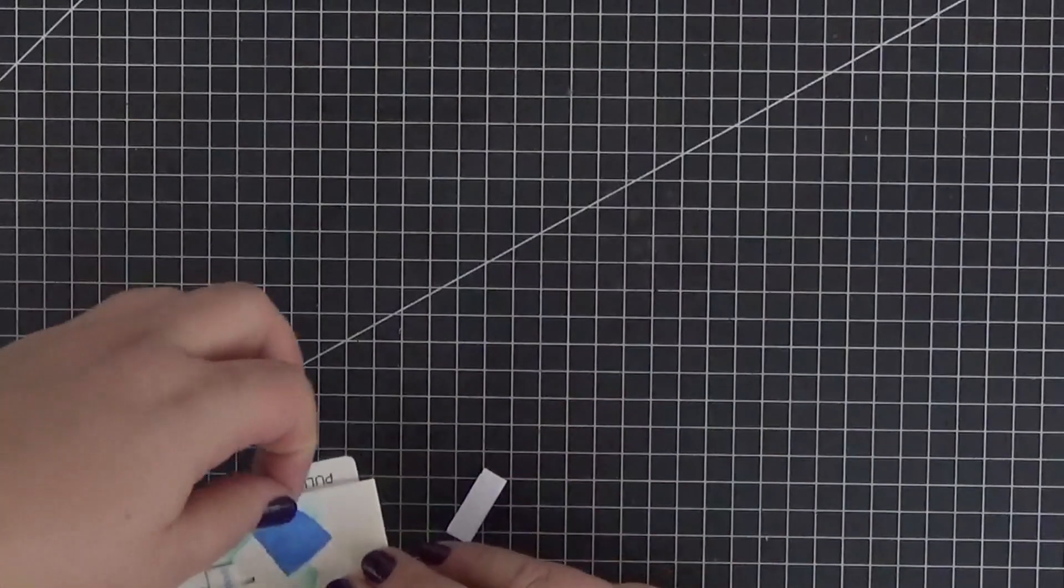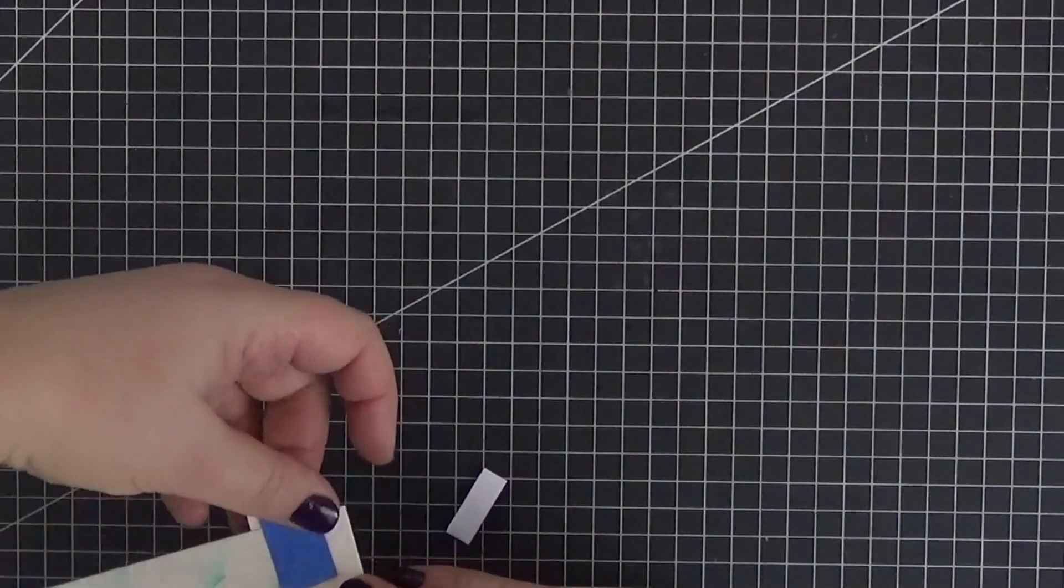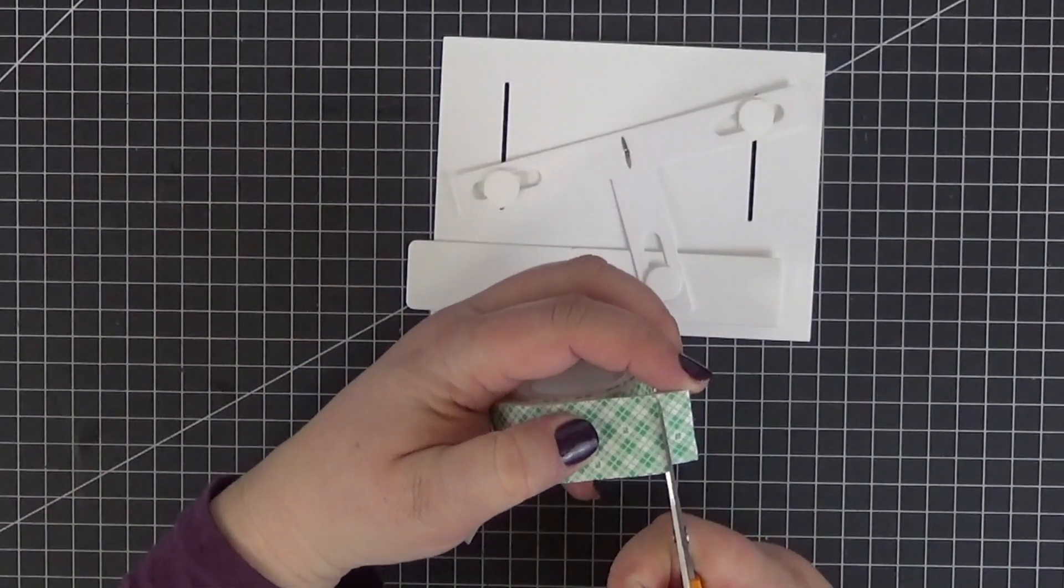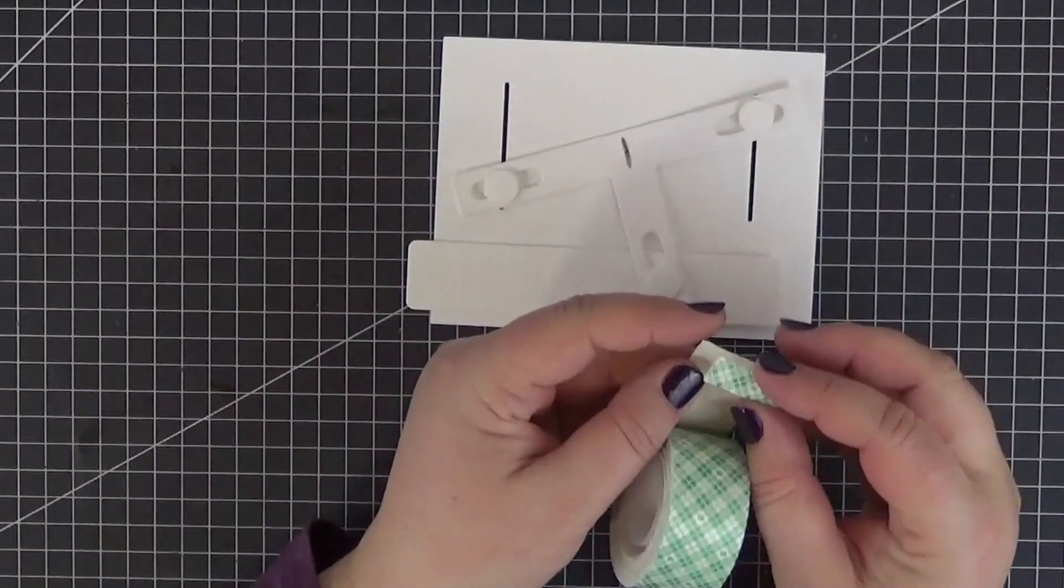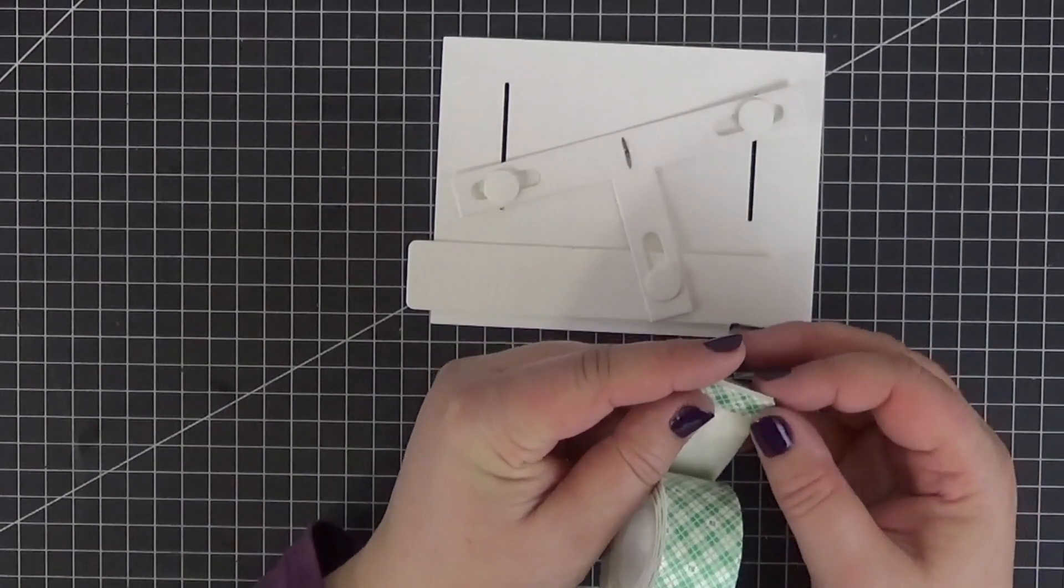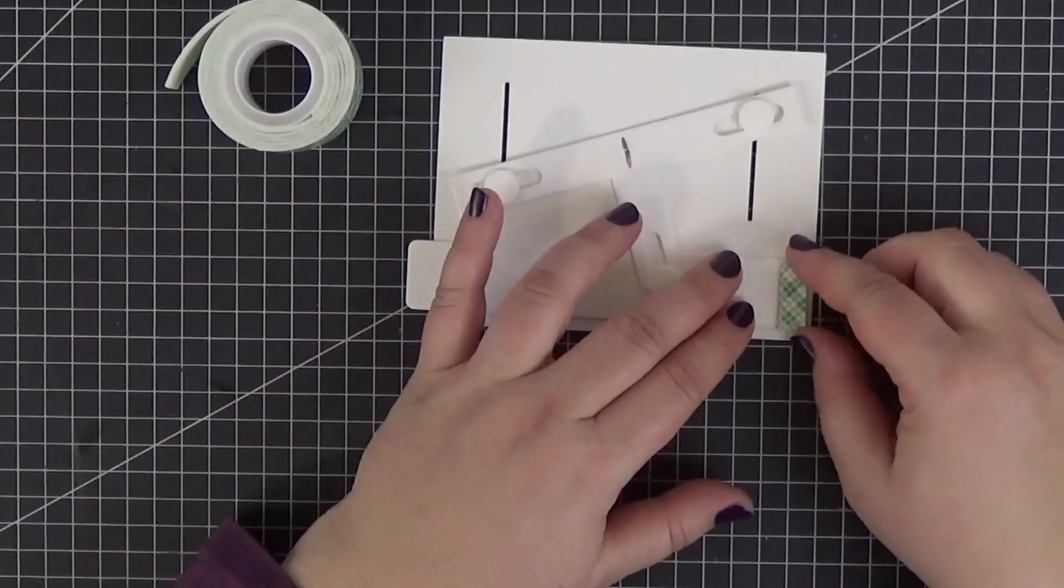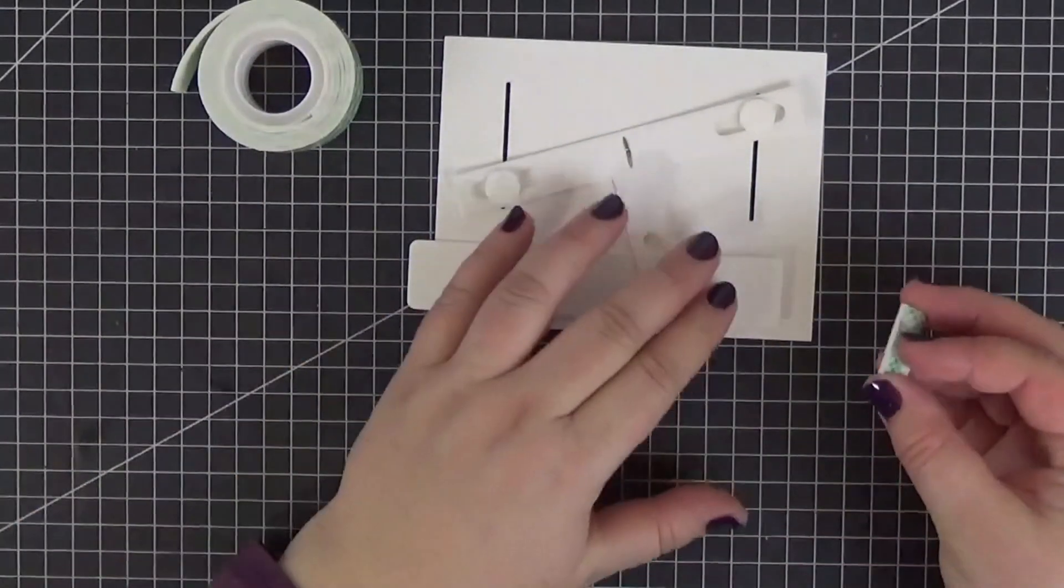But first we need to adjust the length of the pull tab. The best way to do this is to temporarily adhere it to the panel with a piece of tape so that it doesn't move. Then we can grab some double sided foam tape and add a stop to the back of the panel so that it can't be pushed too far in.